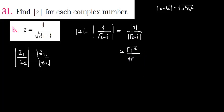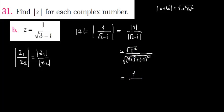For the denominator, the first coefficient is root 3, so we have root 3 squared plus b squared. The second coefficient in front of i is minus 1, and minus 1 squared equals 1. So we get: square root of 1 squared equals 1 over square root of (3 + 1), which is 1 over root 4, which equals 1 over 2.